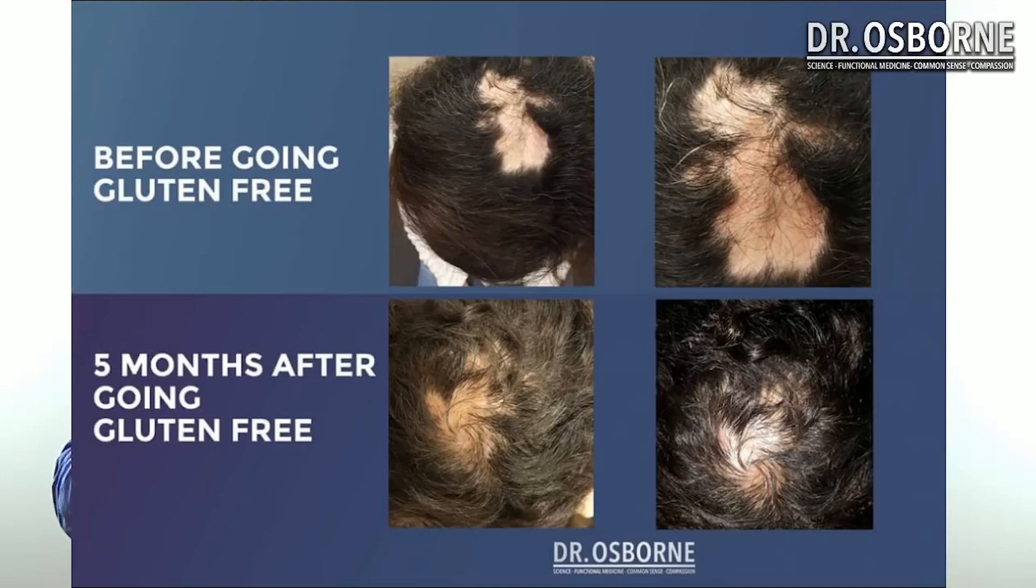If you have gluten sensitivity and you're suffering with any type of autoimmune hair loss—whether it's alopecia universalis, which is total body hair loss—this is autoimmune and it can be stopped. I've seen it be stopped and I've seen it be reversed in many cases if you get to it early enough.